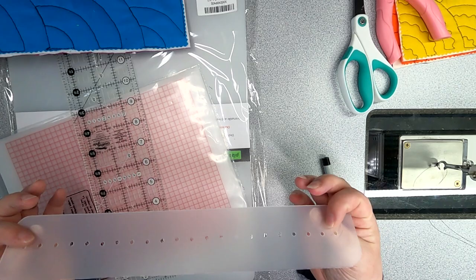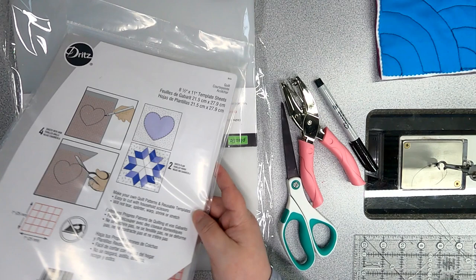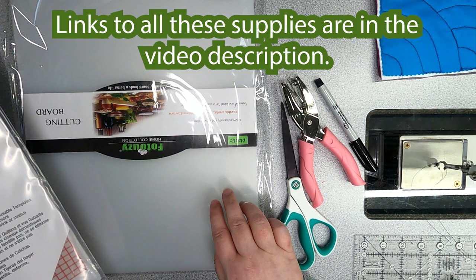You may already have most of the supplies you need for this template. This is template plastic, which you can get in packs, or you can use these really thin cutting mats, which is what I actually use for this template and what I'm going to use again.